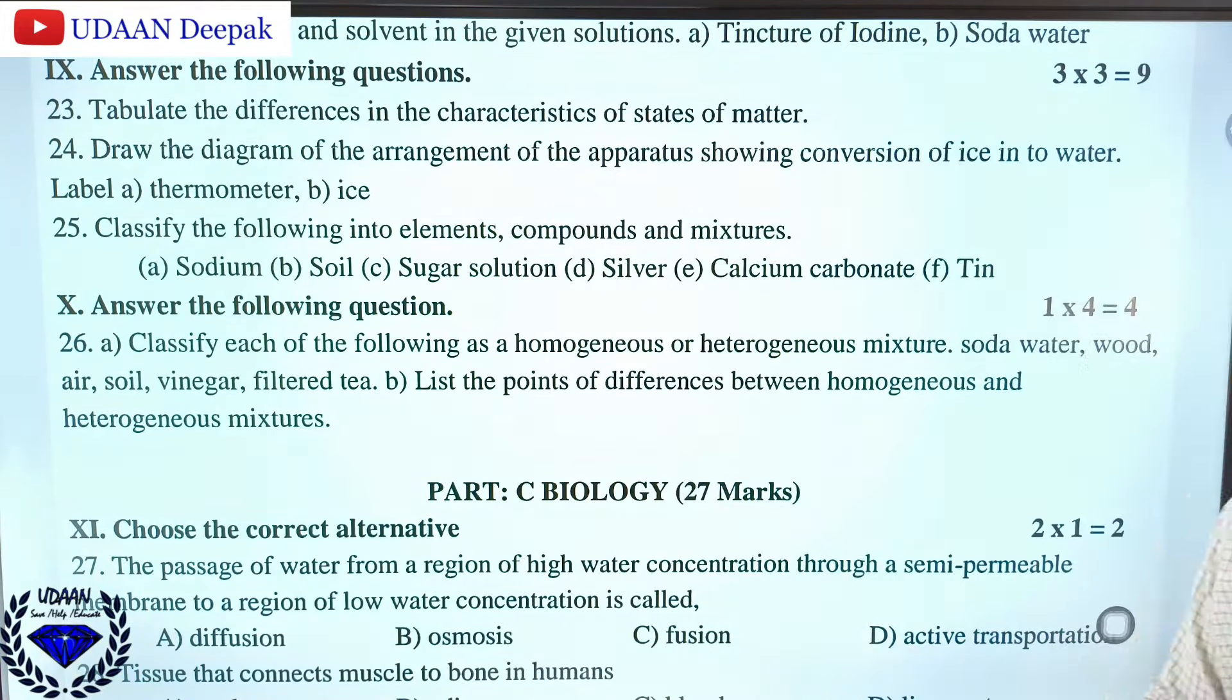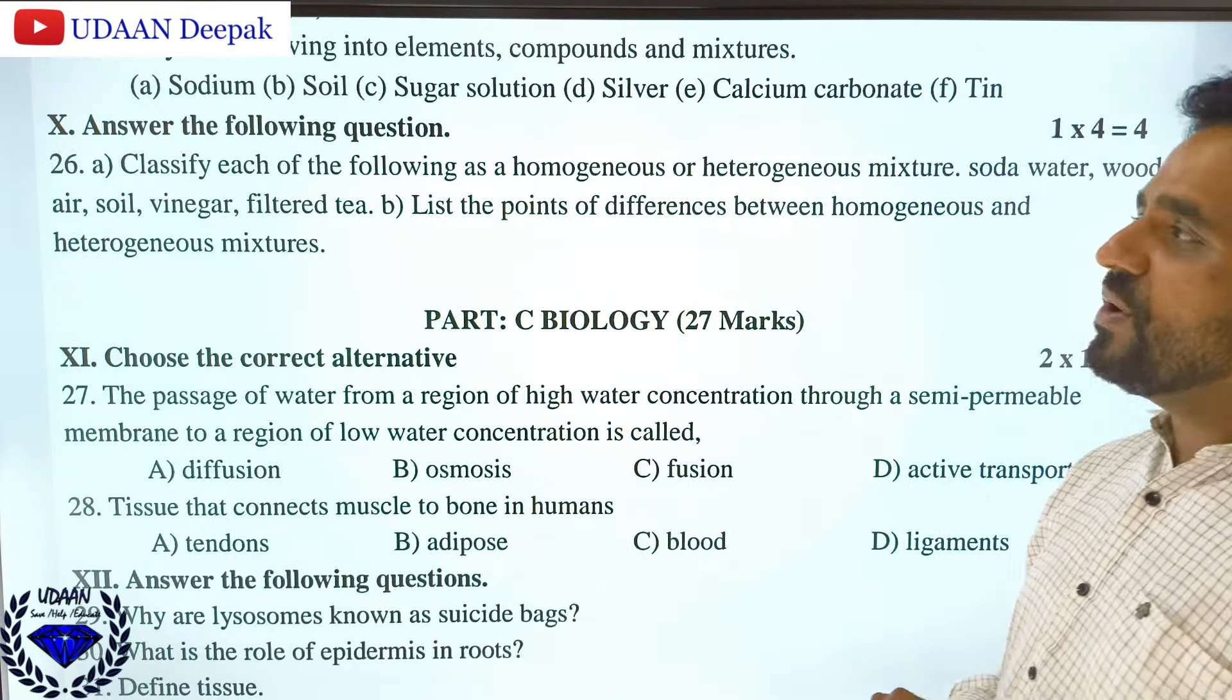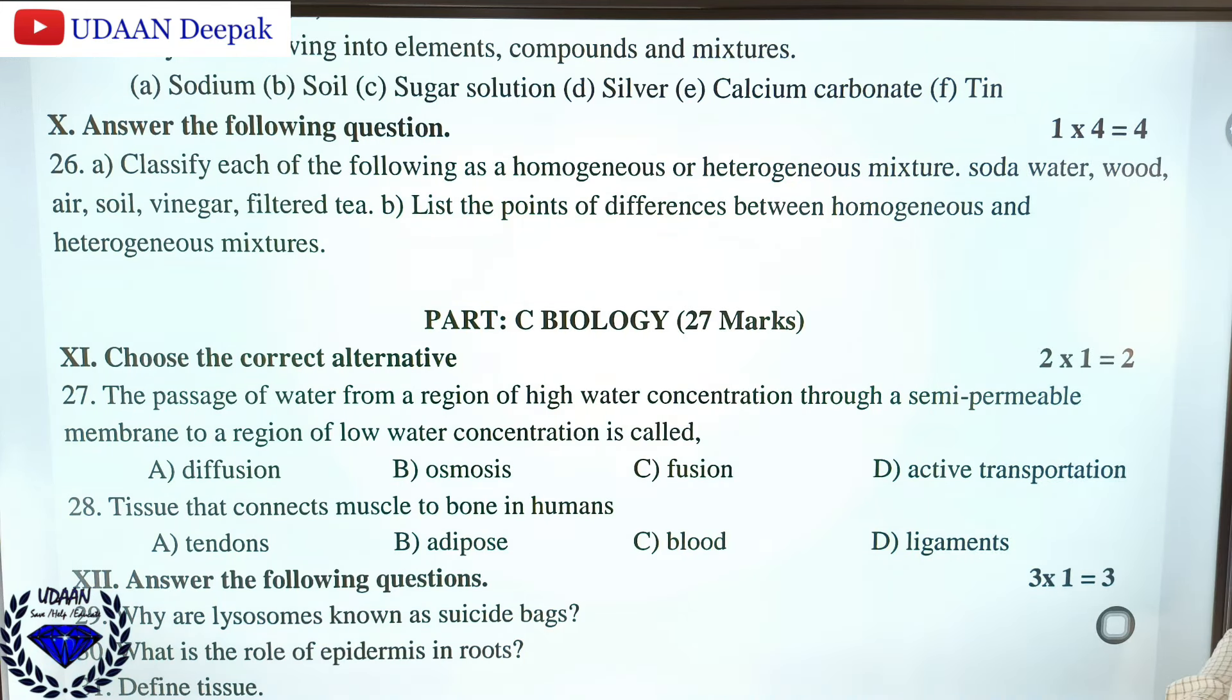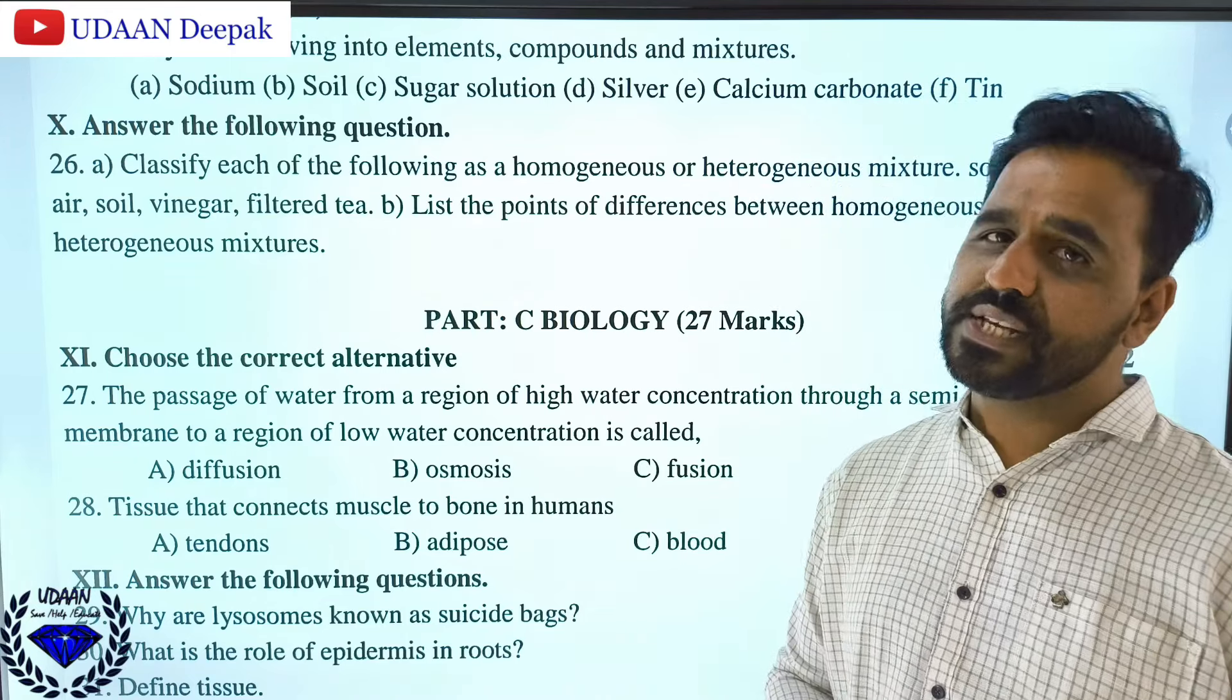Classify the following into element, compound, and mixture. Elements have only the same atoms. Compounds are groups of elements in constant proportion, while mixtures have two or more components not in proper proportion. Sodium is an element, soil is a mixture, sugar solution is a compound, silver is an element, calcium carbonate is a compound, and tin is an element. For homogeneous and heterogeneous mixtures: soda water is homogeneous, wood is heterogeneous, air is heterogeneous, soil is heterogeneous, while vinegar and filtered tea are homogeneous mixtures.